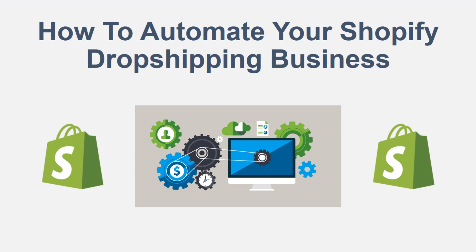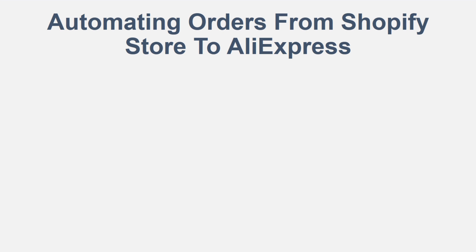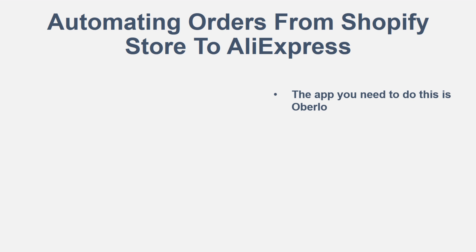Hey, what's up, guys? It's Online Money 24-7, and today we're going to be talking about how to automate your Shopify dropshipping business. So without further ado, let's go ahead and get into it. So the first thing you want to know is how to automate your orders from your Shopify store to AliExpress. The one app you're going to need to be able to do this is Oberlo. Today we're going to be going through the process of how to utilize Oberlo to fully automate your Shopify dropshipping stores.